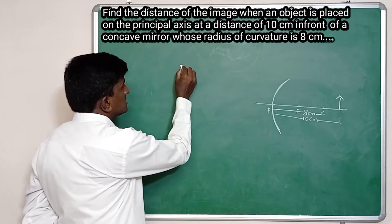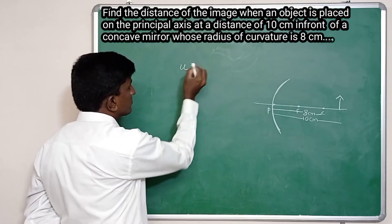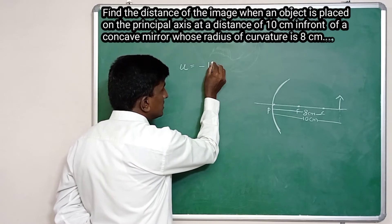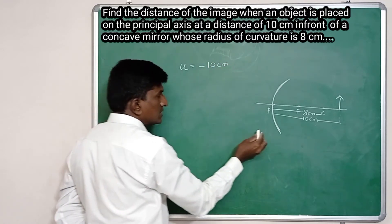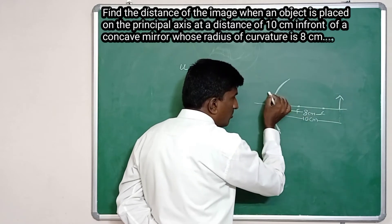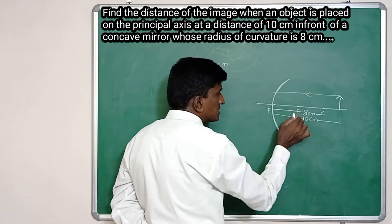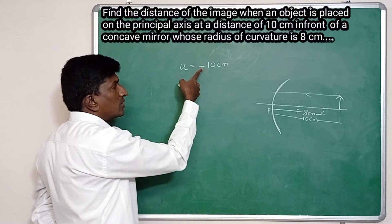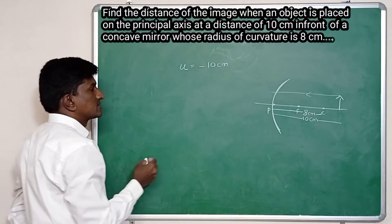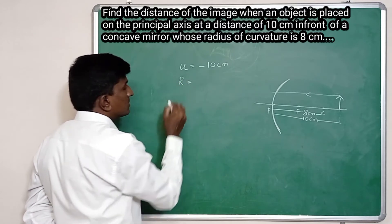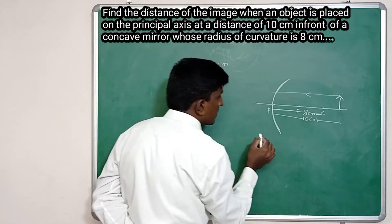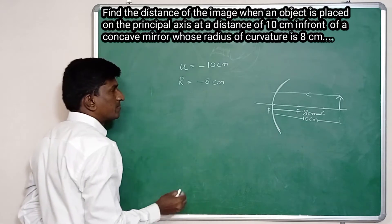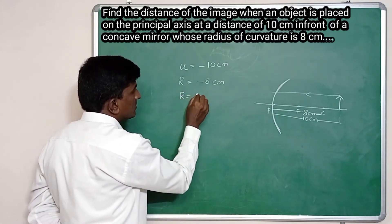The distance of the object is generally taken as U and it is 10 centimeters. We take it as negative because we are measuring from P opposite to the incident light ray. So the distance of object U is minus 10 centimeters. The radius of curvature is also measured opposite to the incident light ray, so R is minus 8 centimeters.